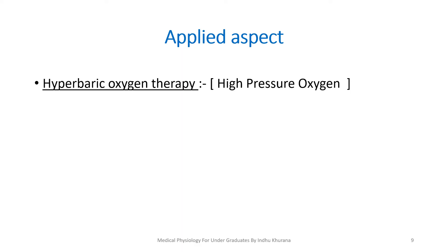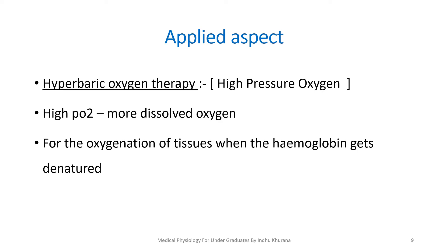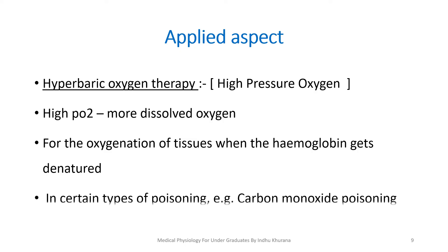The clinical significance of the dissolved form is that it can be used in hyperbaric oxygen therapy. Hyperbaric means high pressure, so when oxygen is under high pressure, more oxygen will be in the dissolved form. This is useful when hemoglobin is denatured, so that the dissolved form can actually oxygenate the tissues. Hemoglobin gets denatured in certain types of poisoning, such as carbon monoxide poisoning.